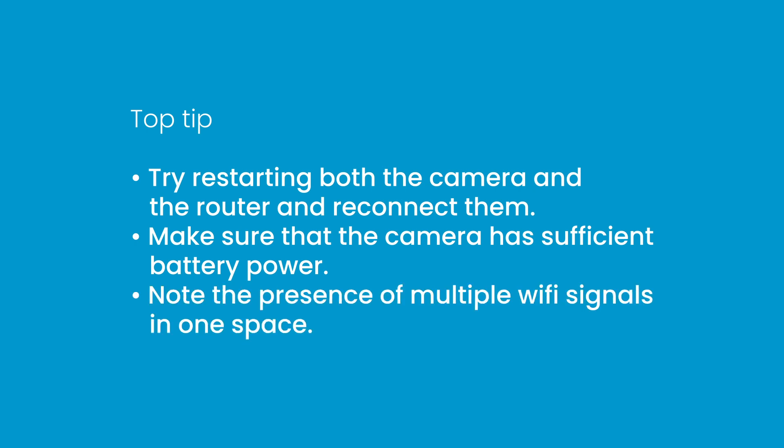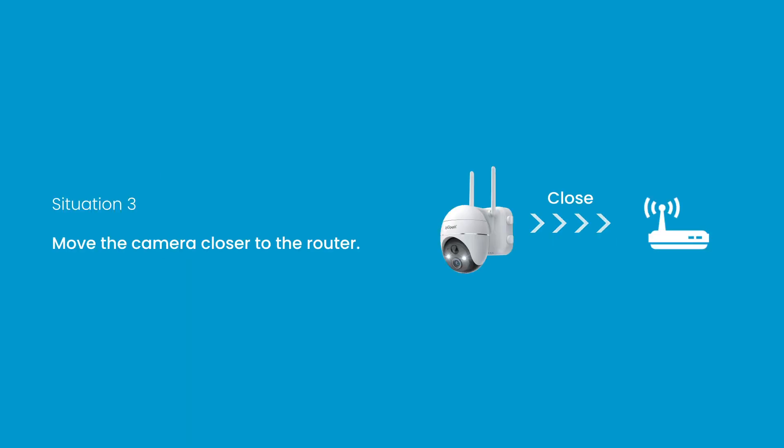Situation 3: Move the camera closer to the router and observe the video for smooth streaming. If the camera still drops offline, this may indicate a hardware failure.